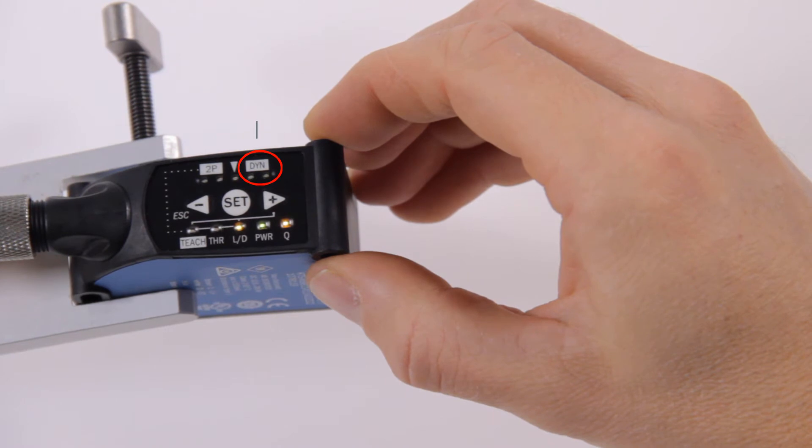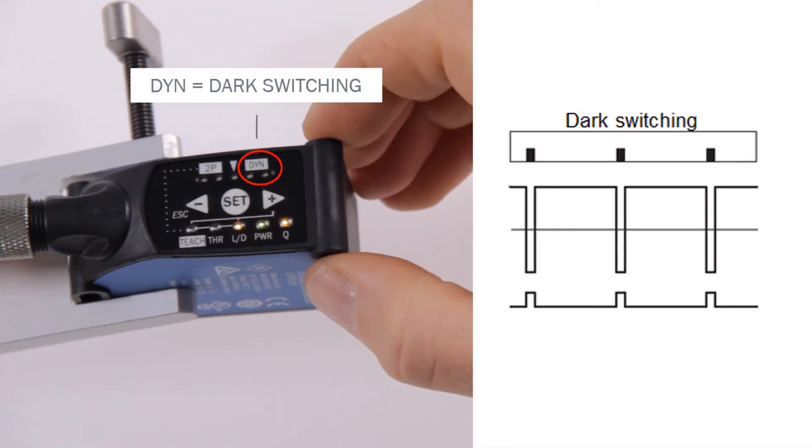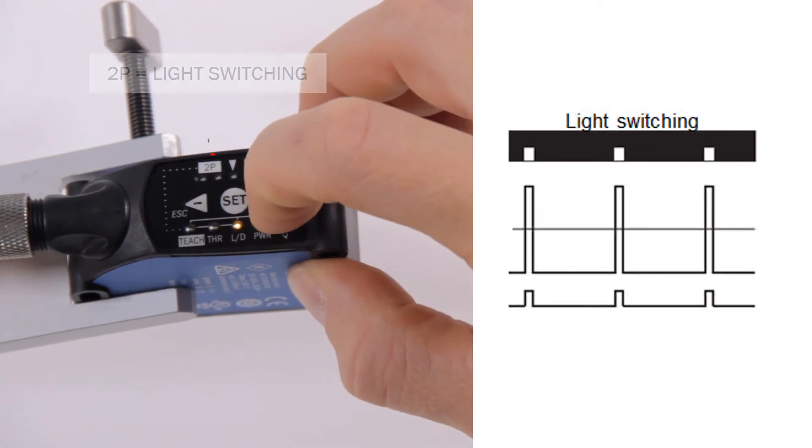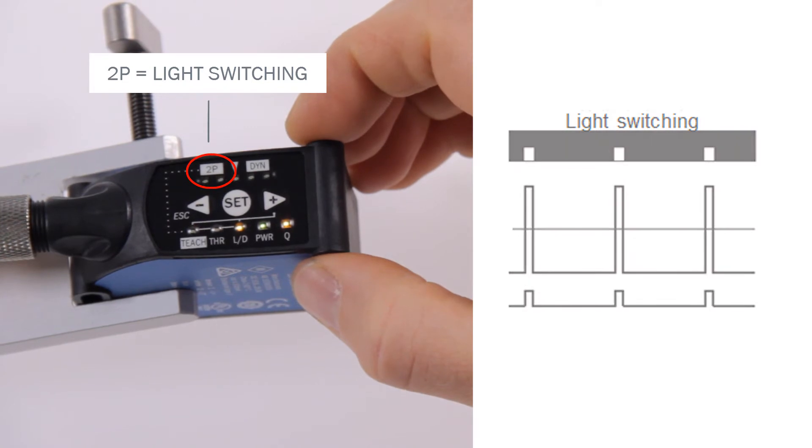The two green LEDs under DYN indicate dark switching and the two green LEDs under 2P indicate light switching. Select one of the settings and confirm with SET.